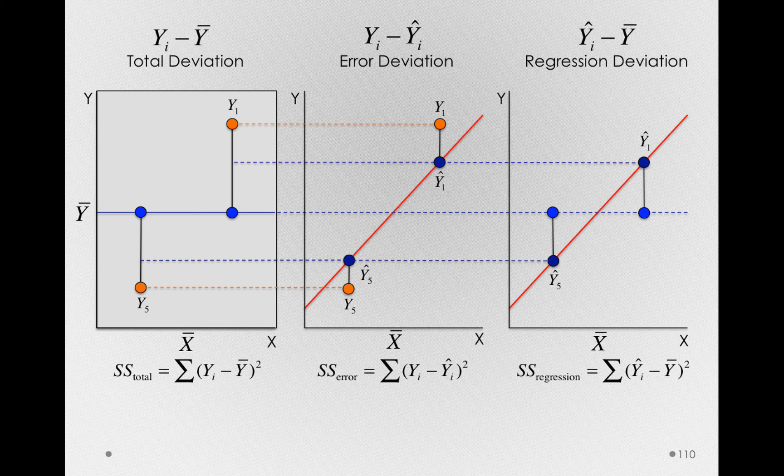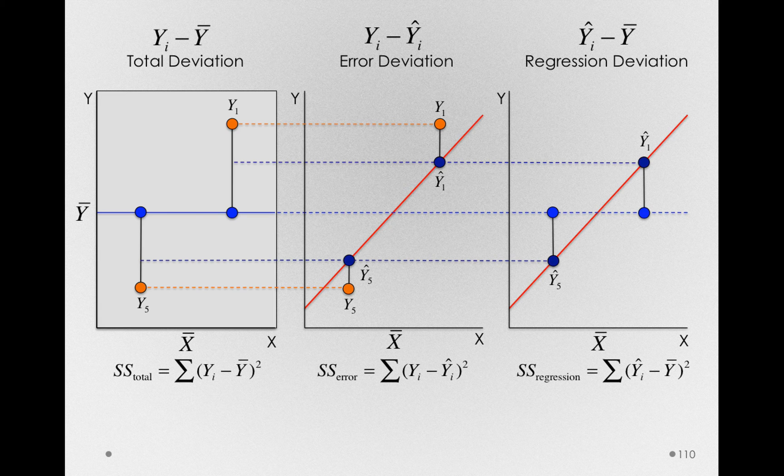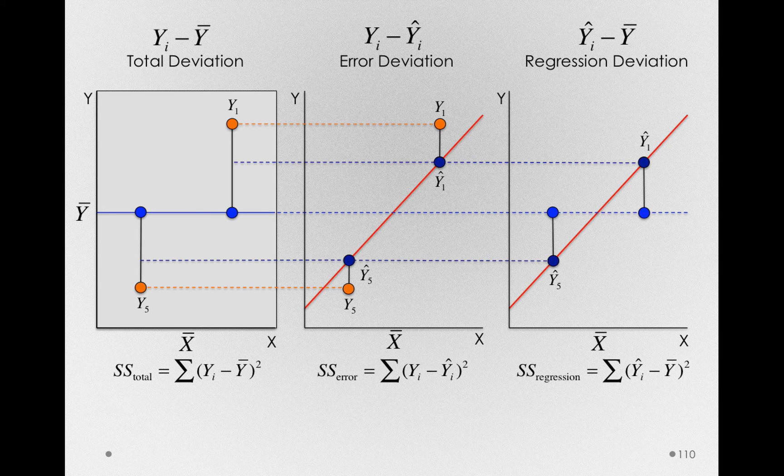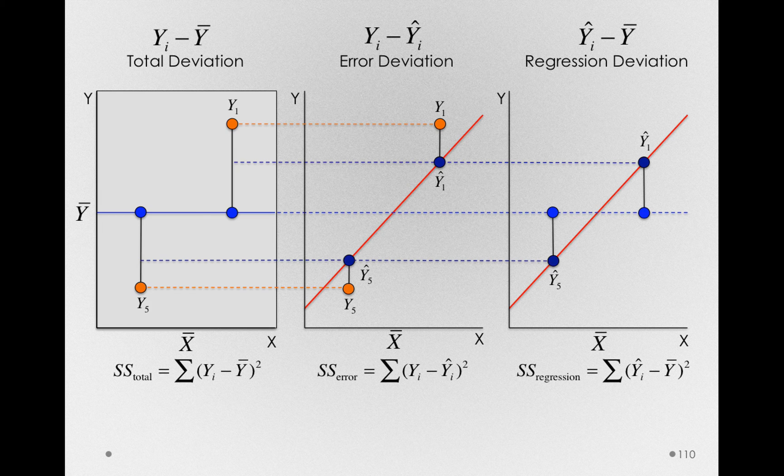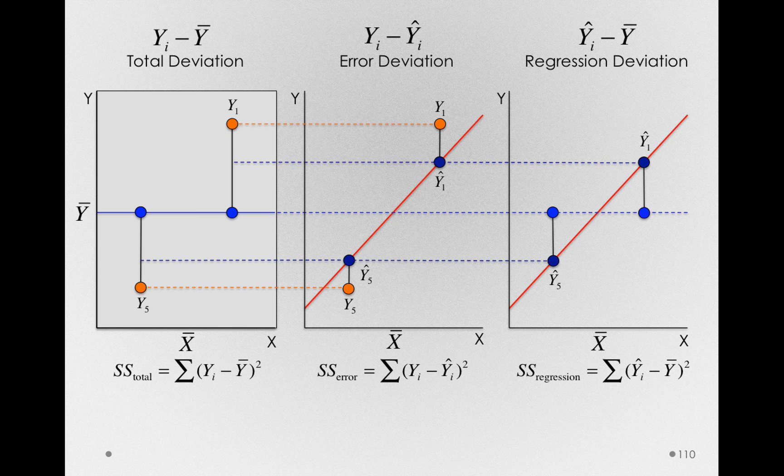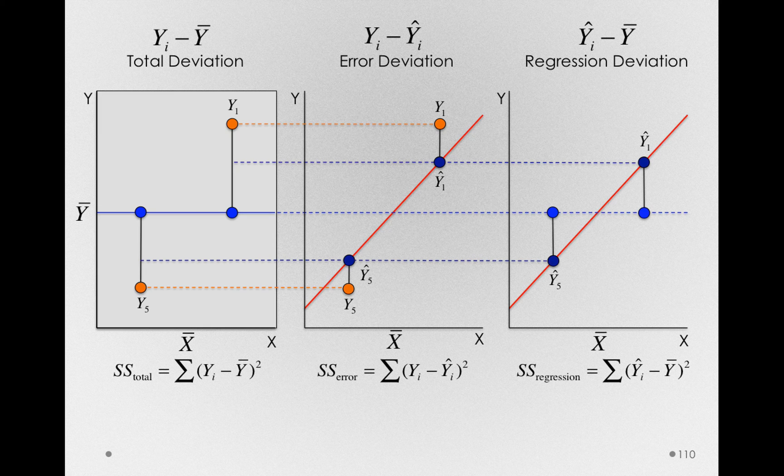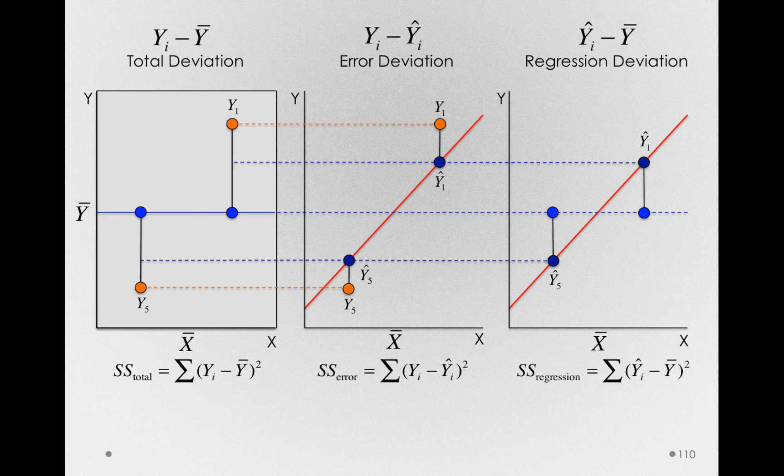Notice that if the regression deviations were 0, that could only happen if the line were perfectly flat. That is, if the line was exactly coincident with y-bar. So to the degree there are regression deviations, that means that this line has a slope. So the regression deviations and the sums of squares for regression are literally capturing the degree to which this line has a slope. And every individual gets to contribute a regression deviation, just like in a mean structure model, everybody got to contribute a treatment deviation.